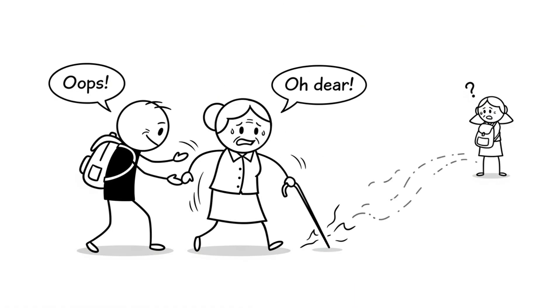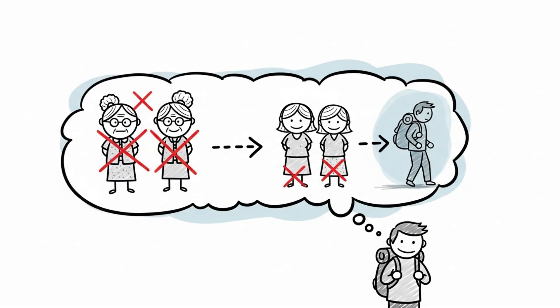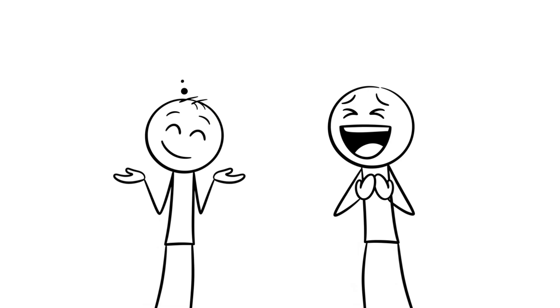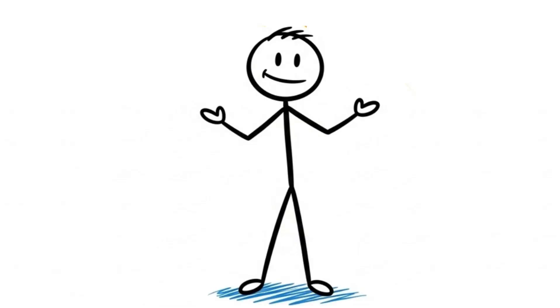Imagine you somehow travel back in time and accidentally prevent your grandparents from meeting. If they never meet, they never have children. That means your parents were never born, which means you were never born, which means you couldn't have traveled back in time to stop them in the first place.